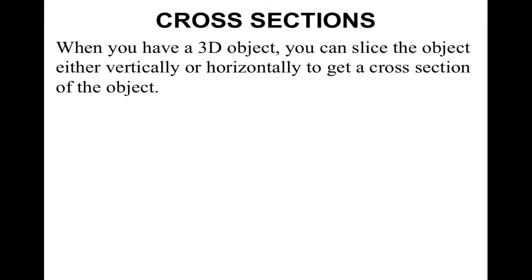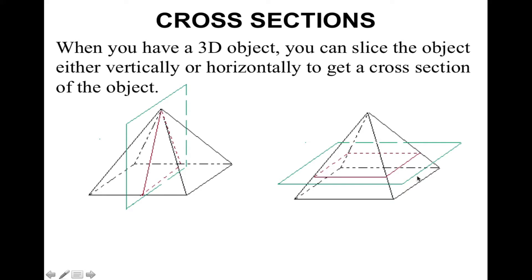Let's first do a quick review of what cross-sections are. When you have a 3D object, you can slice the object either vertically or horizontally to get a cross-section of the object. For example, here would be slicing a pyramid vertically and then horizontally. You'll notice that here, your cross-sections are 2D equilateral triangles, and here your cross-sections are 2D squares.